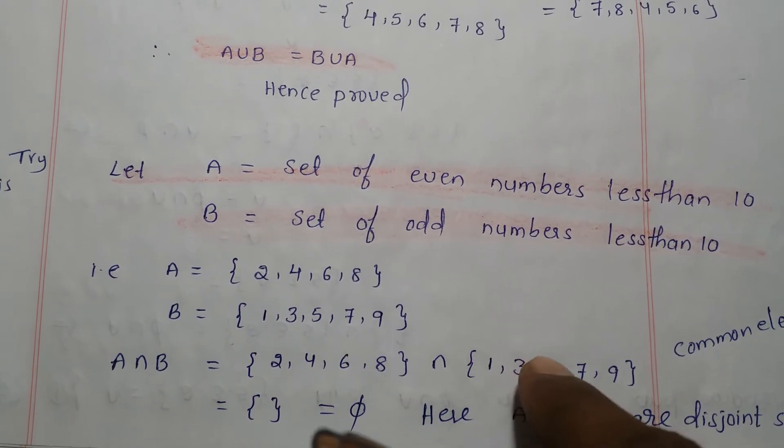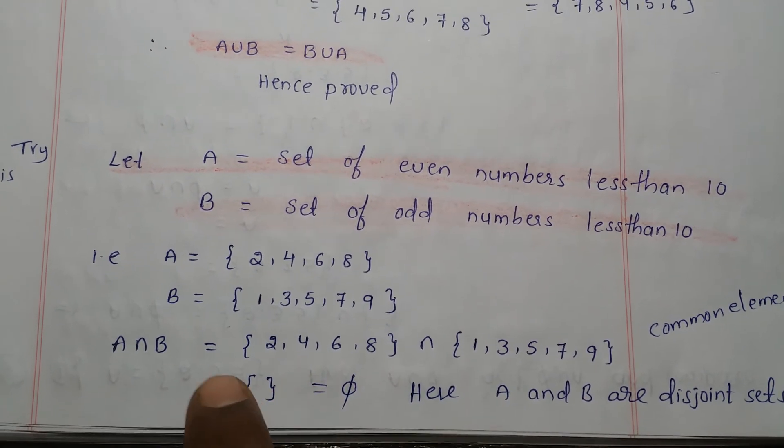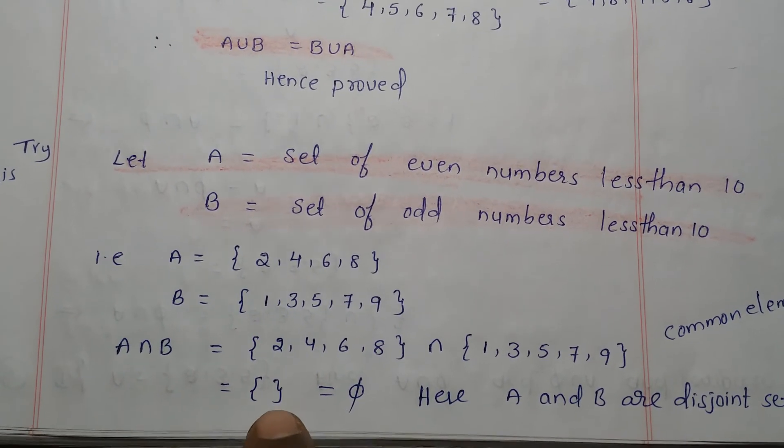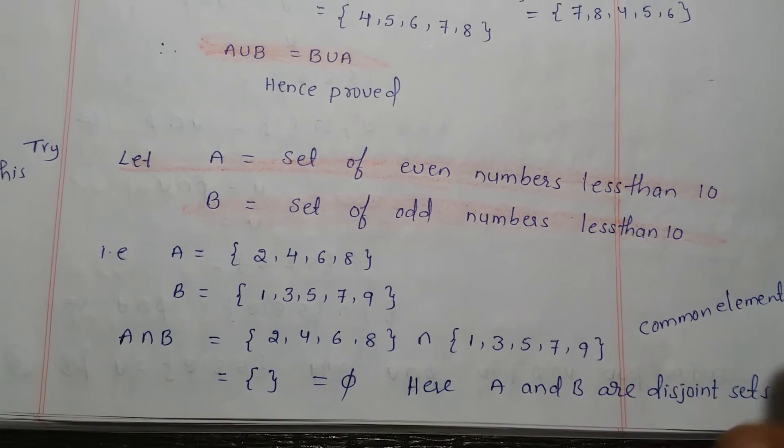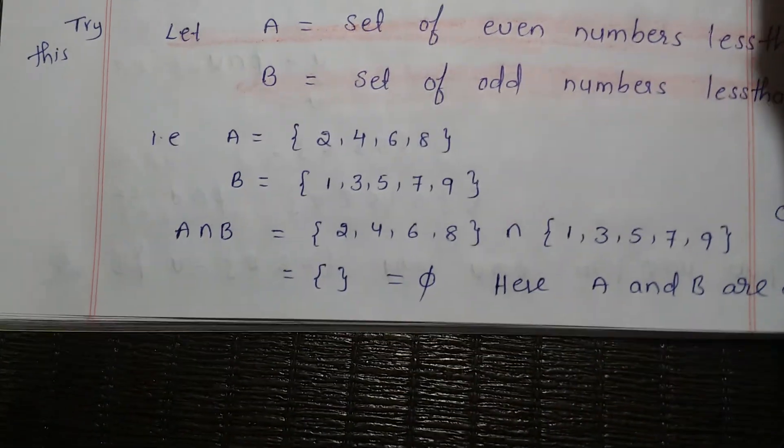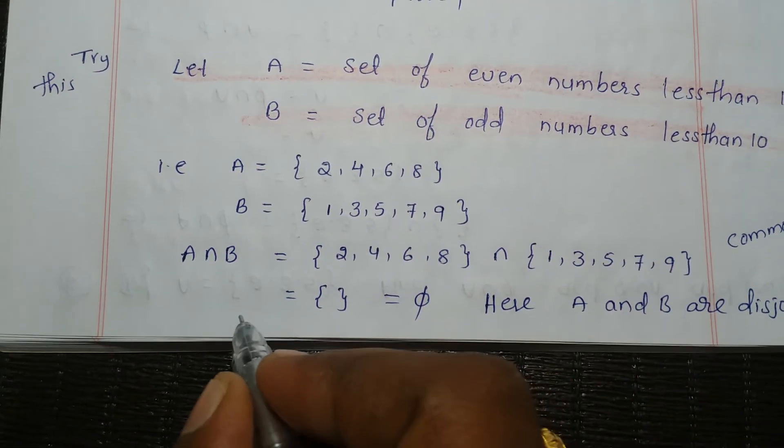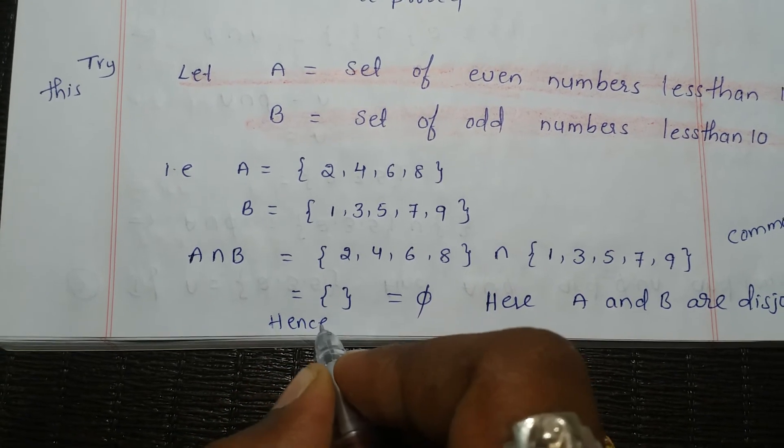There are no common elements present in set A and set B. Therefore A intersection B is a null set. Here A and B are disjoint sets. Therefore, the intersection of any two disjoint sets is a null set, hence proved.